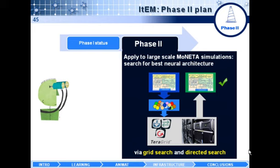In phase two, we want to apply ITEM to the prototyping and implementation of Moneta. The idea here is to start from a canonical whole-brain system, produce different variations in parameter and configuration space, and send these models and the associated virtual environment to heterogeneous high-performance computing resources.